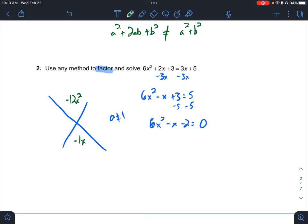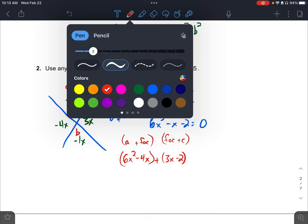So I get negative 12x squared, negative 1x, factors negative 4x, positive 3x. Don't forget, when a is not 1, you've got to do step 2. Remember, this is a times c, this is my b term. So I have my a term, 6x squared, pick a factor minus 4x. I have a plus factor, plus c, 3x minus 2.